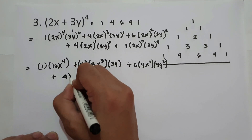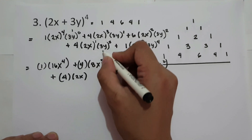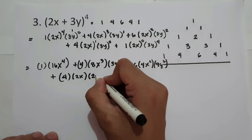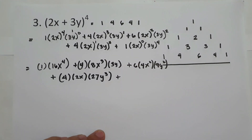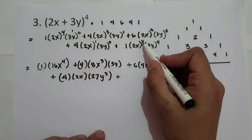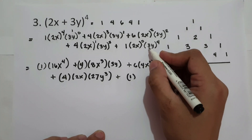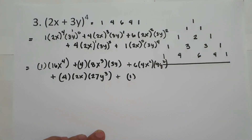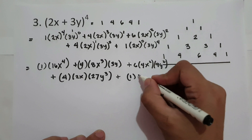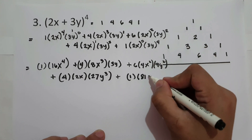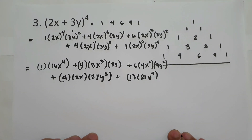Plus 4 times 2x raised to 1, that is 2x, then 3 raised to 3 — that is 27 — times y cubed. Plus 2x raised to 0, that is 1, times 1 is 1, then 3 raised to 4: 3 times 3 is 9, 9 times 3 is 27, 27 times 3 is 81, times y raised to 4. Now let us simplify our final answer.